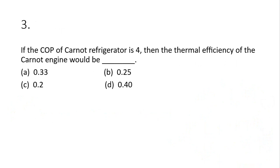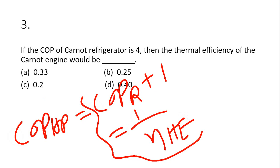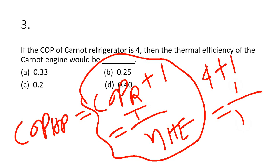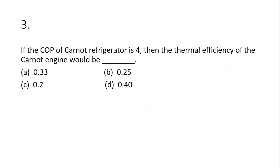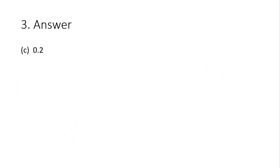Question 3: if the COP of a Carnot refrigerator is 4, what is the thermal efficiency of the Carnot engine? We use the relationship: COP of heat pump = COP of refrigerator + 1 = 1 / efficiency of heat engine. So 4 + 1 = 5 = 1 / efficiency, giving efficiency = 1/5 = 0.2. Option C is the correct answer — remember that formula.